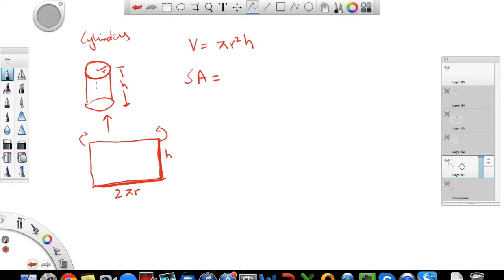So surface area is the sum of all these areas that you can see. Right? So here there are three areas to think about. You have the circular top plus the circular bottom plus the curved edge.